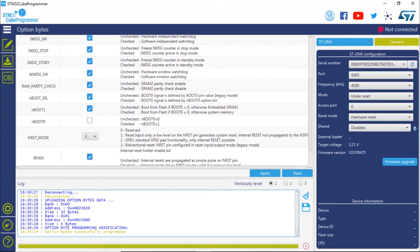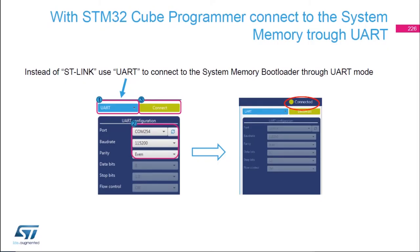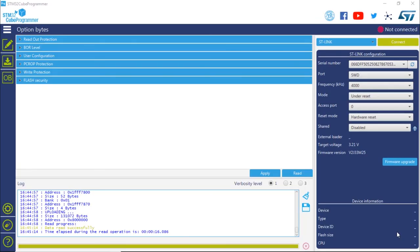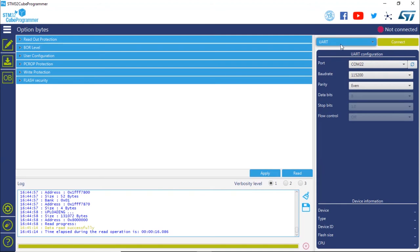Unplug and replug the board. In STM32CubeProgrammer, connect to the system memory through UART. Instead of ST-Link, select UART. For the port, select the COM port associated to the ST-Link — check your Device Manager if unsure; in this case it is COM254. For the baud rate, select 115200, and the parity will be Even. Reset your board and click Connect. You should now be connected to the system bootloader through UART.